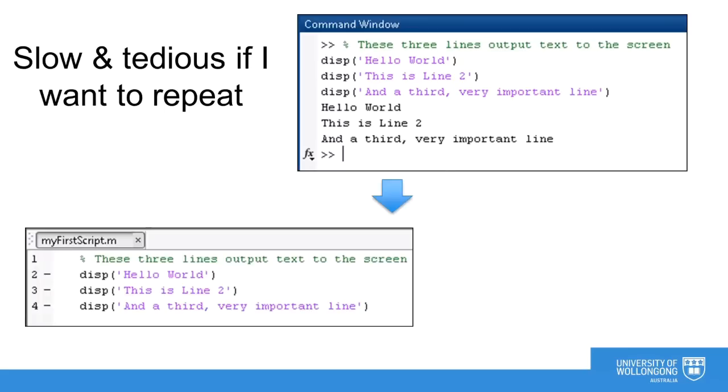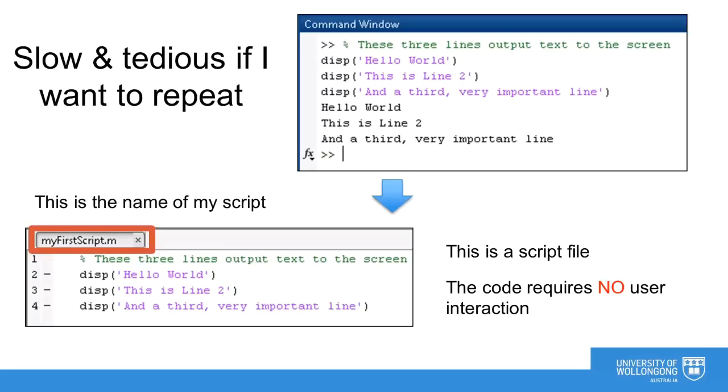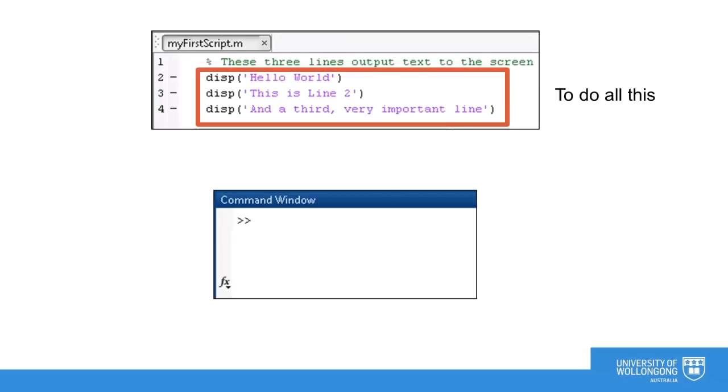A script is a file that contains a sequence of commands that can be executed by MATLAB without user interaction. In the example, I have created a script called myfirstscript.m. If I go to the command window and type the name of the script I created, all the lines of code in the script I created are executed.